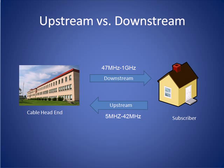Here is the frequency map used today in most legacy hybrid fiber coax networks in North America. The low end of the frequency band from 5MHz to 42MHz is currently used for upstream transmission. Uses for these frequencies today consist of billing information for video on demand and other legacy applications. Downstream, frequencies from 47MHz to 1GHz are used for cable TV transmission.